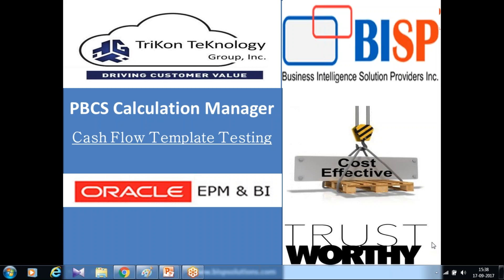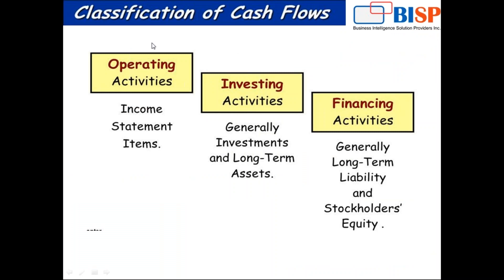Cash flow, as the name indicates, is the movement of cash going out or coming into your business. To calculate that, we use cash flow. It consists of three parts: operating activities, investing activities, and financial activities. Operating activities pertain to the income statement, which covers change in account receivable, change in inventory, change in prepaid, and change in account payable. It means the money you receive through your regular business operations comes under operating activities. If you are a manufacturing company selling goods or buying raw material, it comes under operating activities.